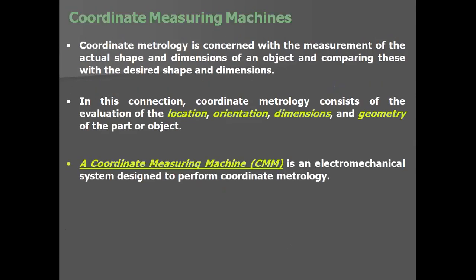Now discussing contact inspection — the equipment is the Coordinate Measuring Machine (CMM). Coordinate metrology is concerned with the measurement of the actual shape and dimensions of an object and comparing these with the desired shape and dimensions. This includes form checks such as cylindricity, circularity, ovality, and concentricity. Coordinate metrology involves evaluation of the location, orientation, dimensions, and geometry of the part — for example, the location and orientation of a hole.